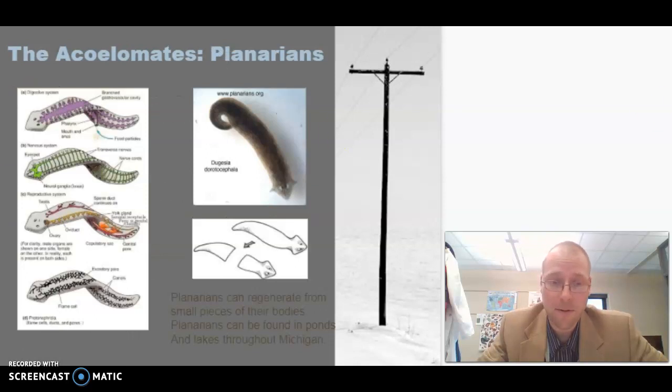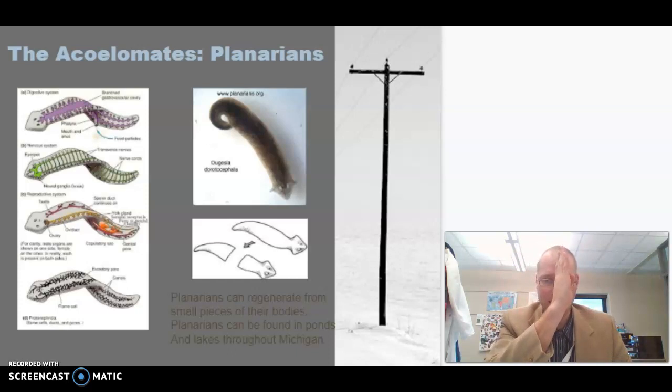So here's an acoelomate that we do have in Michigan. This is called a planarian. Planarians live in water. I think they like still water, clean water. So an interesting thing about planarians is they have the ability to regenerate. It's kind of creepy. But if you take a planarian and you cut a planarian in half, both halves make a new planarian. If you cut a planarian partway in half, you get some real creepy stuff. So there are some pictures online where people took planarians, which they're actually very small creatures, took planarians, and they basically sliced right down the middle of their face. And each half face grew another half face. And so you get a two-headed planarian. Creepy.